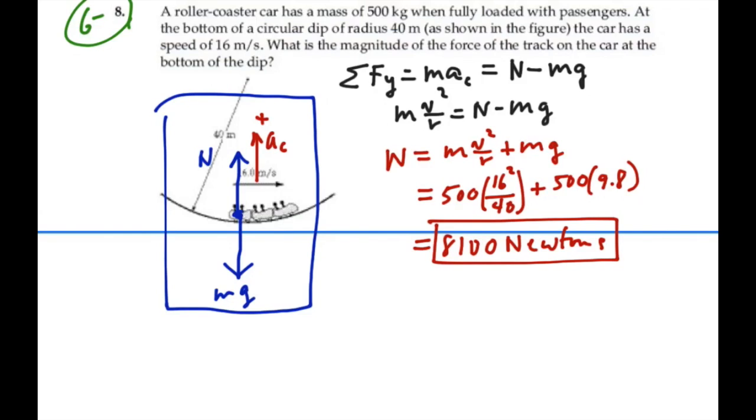So our normal force is 8,100 newtons. This is not the net force. This is just the force of the track on the car. Actually, the net force is this force minus the weight. So the net force would be smaller than this normal force. But this is indeed the force of the track on the car, and it is in an upward direction.